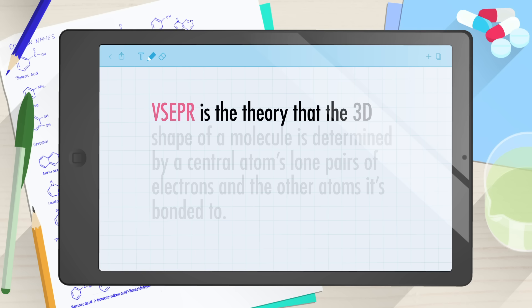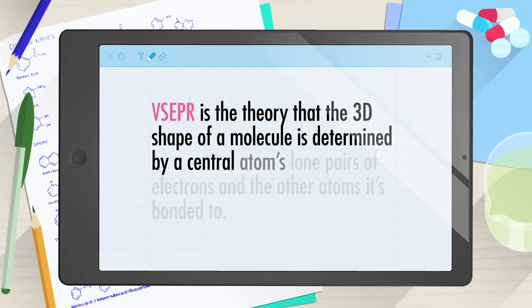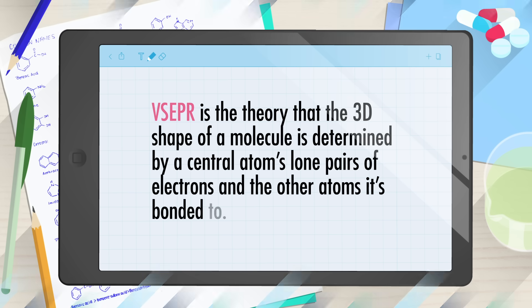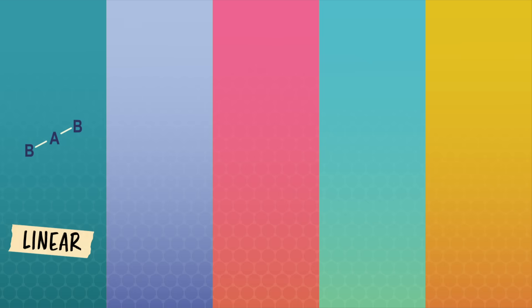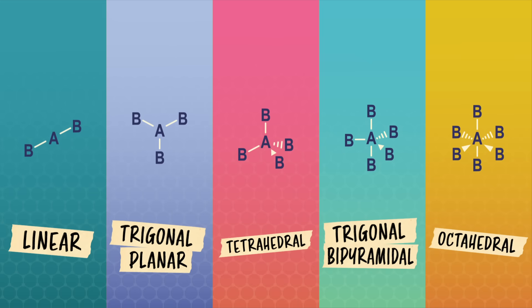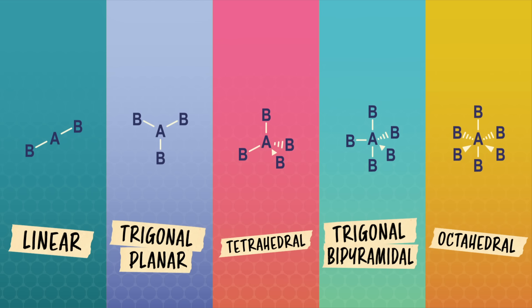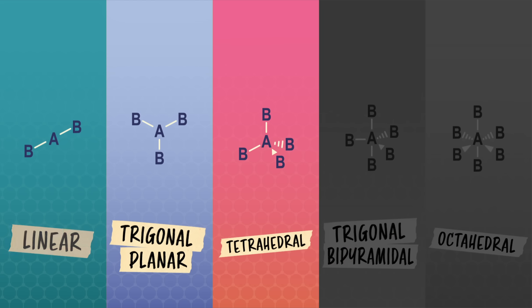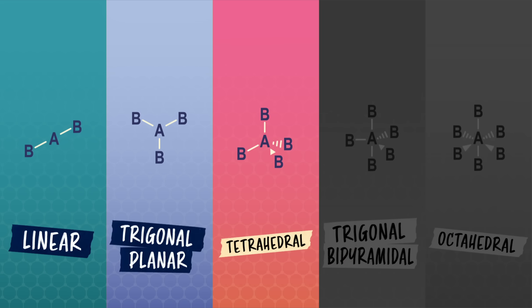Valence shell electron pair repulsion theory, or VSEPR, was first proposed in 1957 and started to explain the observed 3D shapes of molecular structures. VSEPR is the theory that the 3D shape of a molecule is determined by a central atom's lone pairs of electrons and the other atoms it's bonded to. There are five generally accepted VSEPR electron pair geometries. In organic chemistry, we use three of these five geometries: linear, trigonal planar, and tetrahedral.